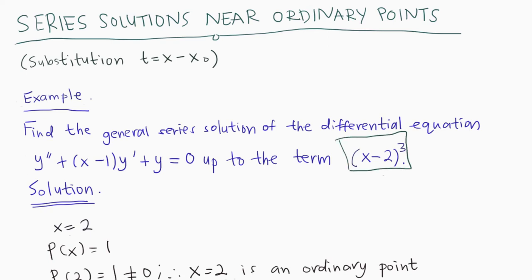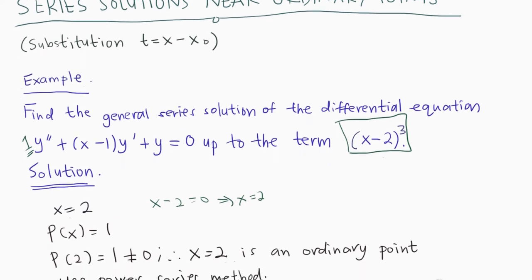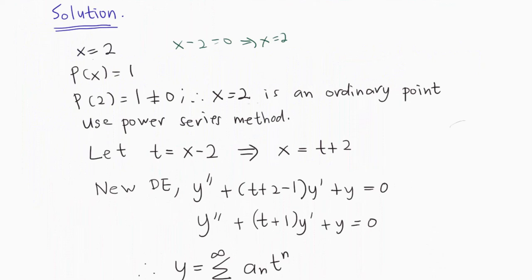From the factor given, we know that x is not at the origin because x - 2 = 0 gives x = 2. From the given DE, we check x = 2 in P(x): P(2) = 1, which is not equal to 0. That's why x = 2 is an ordinary point, and we will be using the power series method.